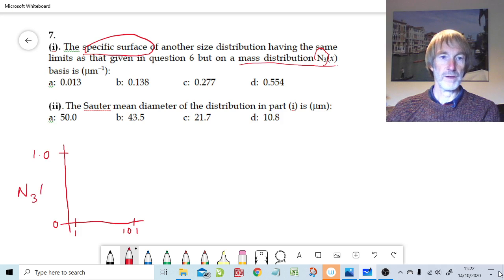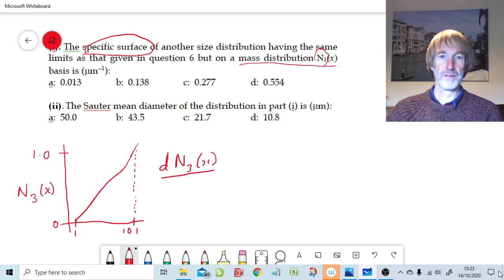We still have the same geometric, that should be a straight line going to 101 microns. So it's not at all surprising that N3, because now we're differentiating for the mass or volume distribution. So rather than N0x, it's N3x. So we need to differentiate that, and that would give us n3x.